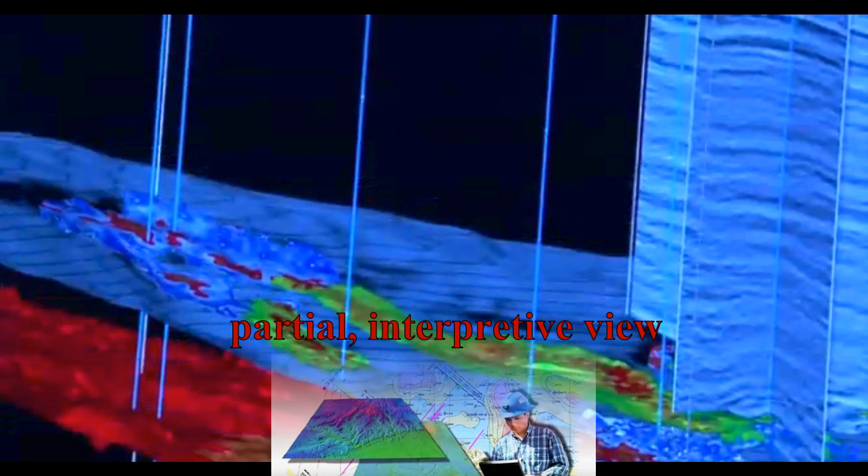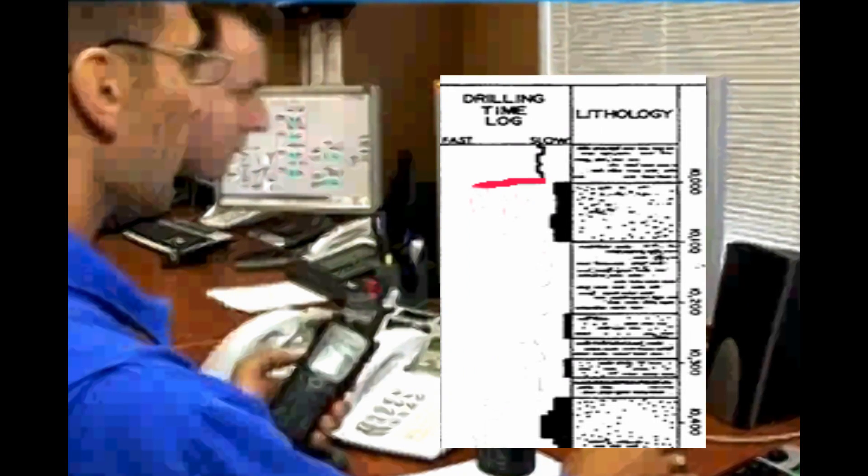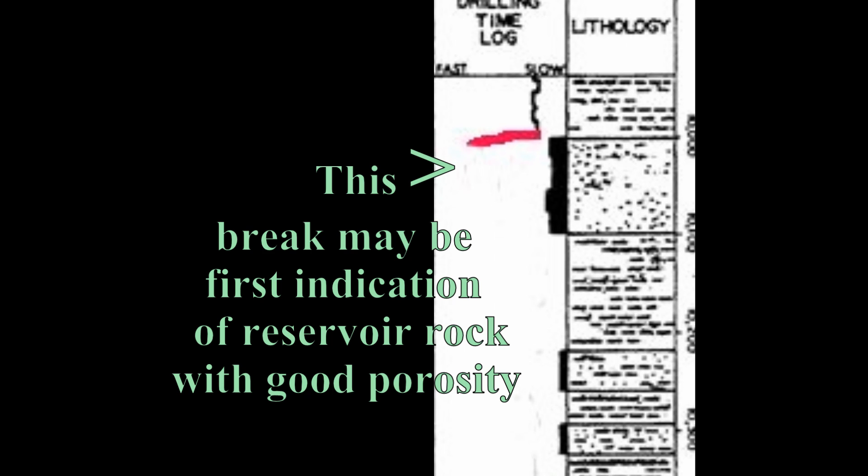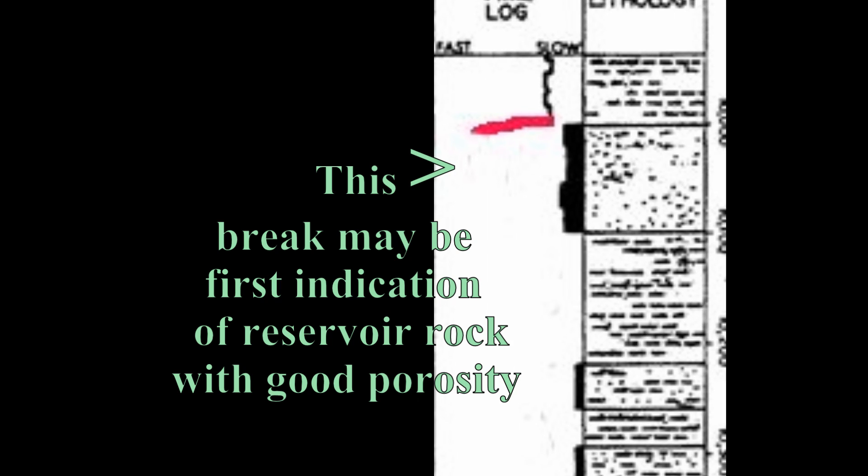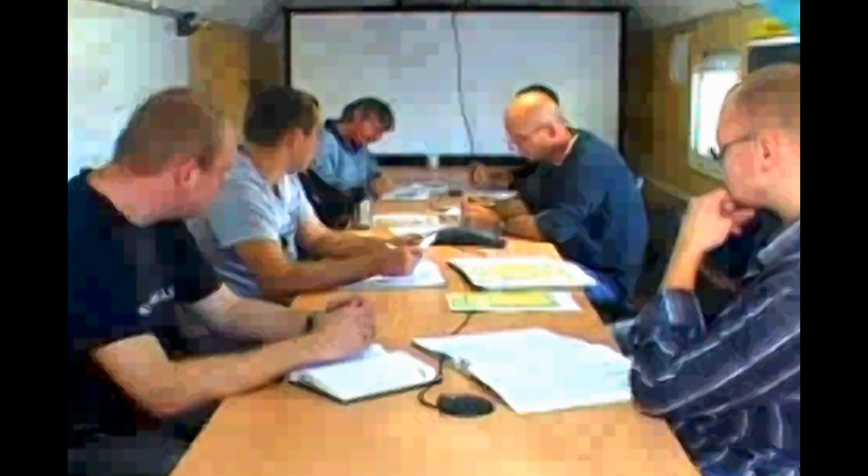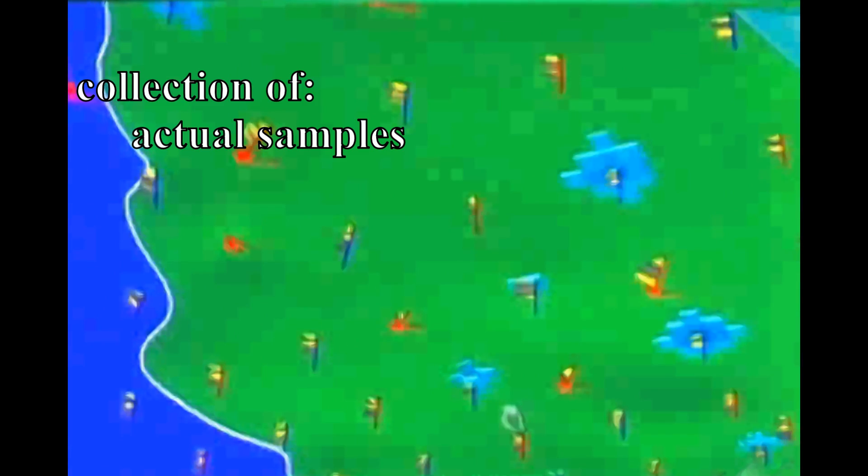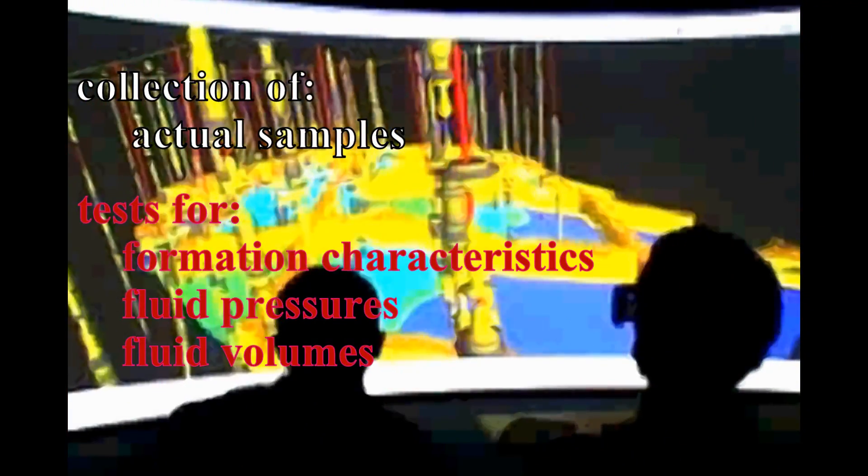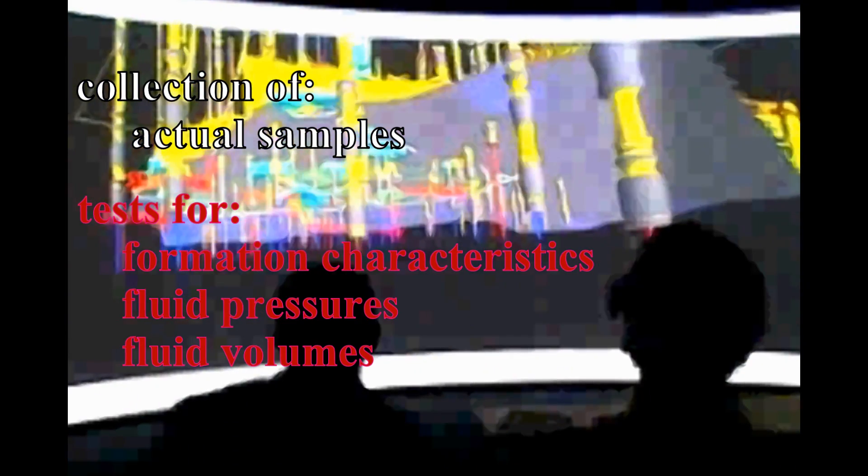These formation evaluation techniques, however, give them only a partial interpretive view of what is there in the subsurface. For instance, when the driller notices a jump or break on the drilling log, he performs a bottoms up circulation. This break in the mud log may be the first indication of a reservoir rock with good porosity. This preliminary data from the mud log can only suggest the potential of a reservoir. Procedures and tests to collect actual samples and test for formation characteristics and fluid pressures and volumes will have to be conducted.